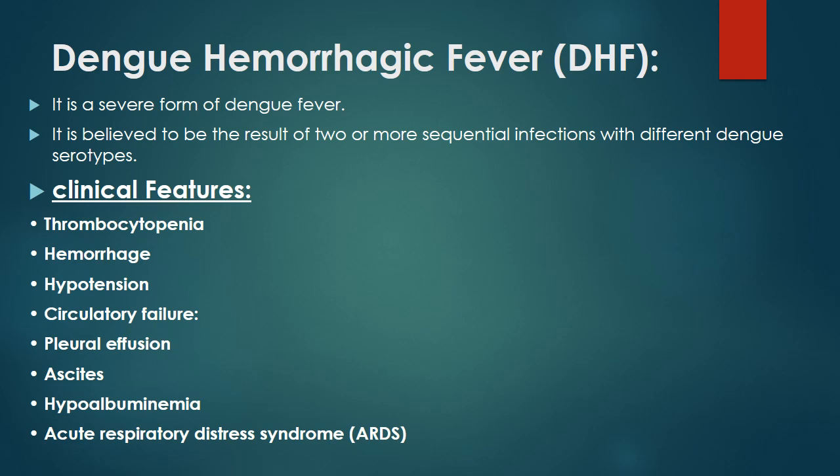Other complications of dengue fever include disseminated intravascular coagulation, dengue shock syndrome, hepatitis with increased levels of hepatic enzymes ALT and AST, cerebral hemorrhage, encephalitis, cranial nerve palsies, myocarditis, and rhabdomyolysis.